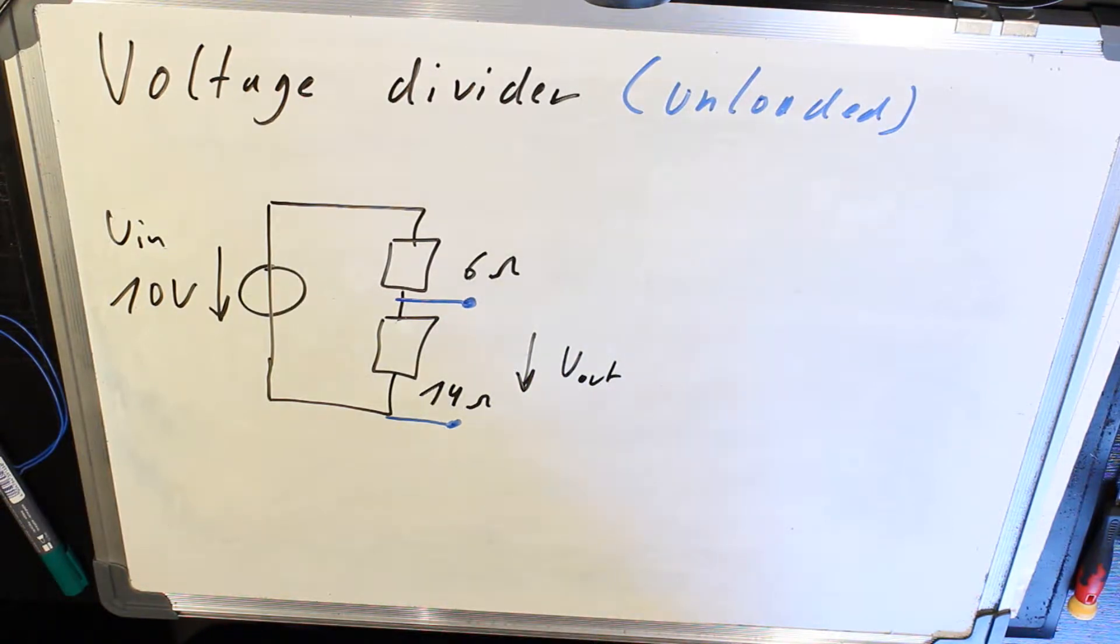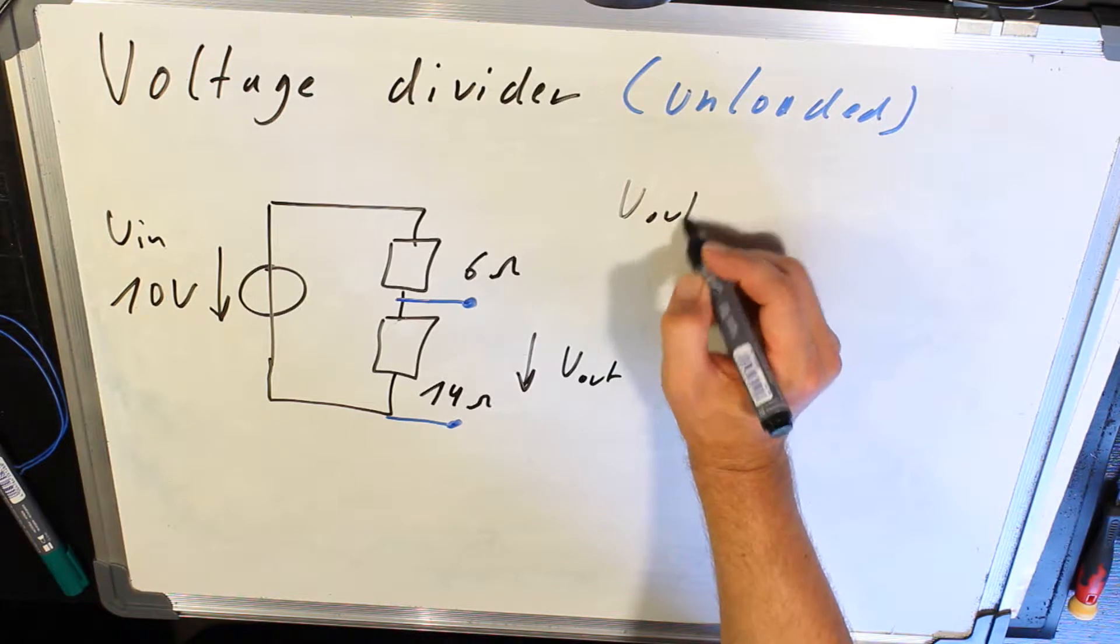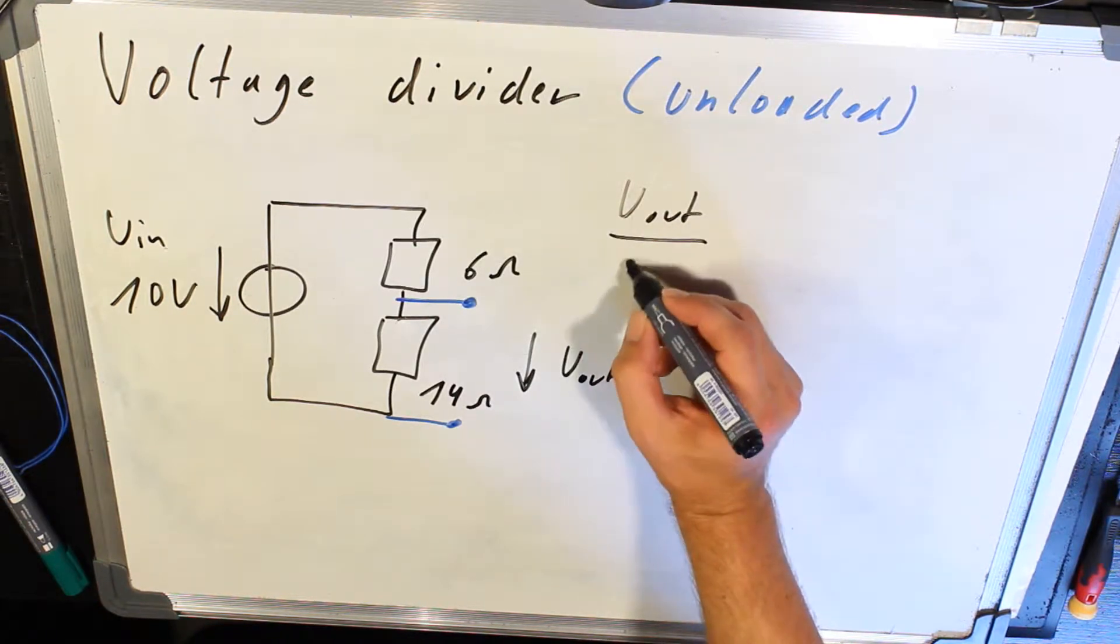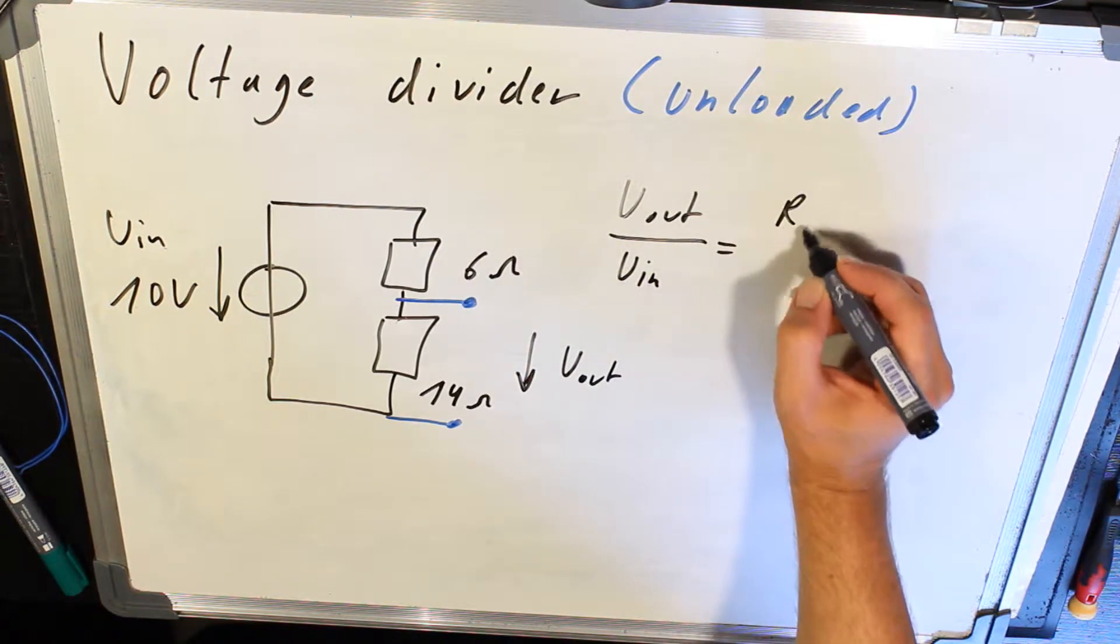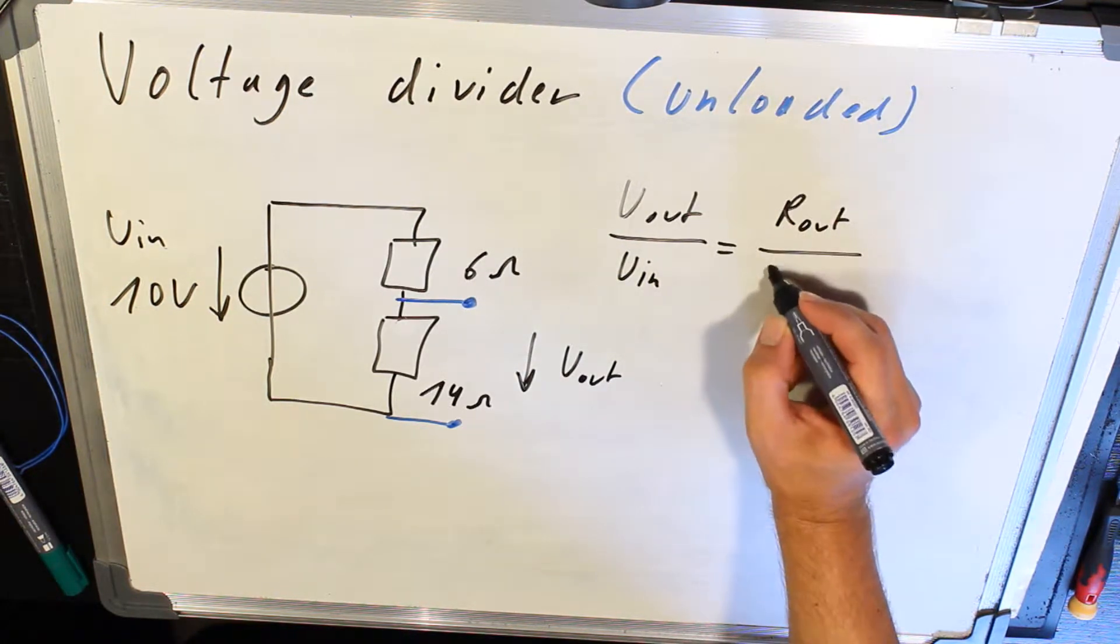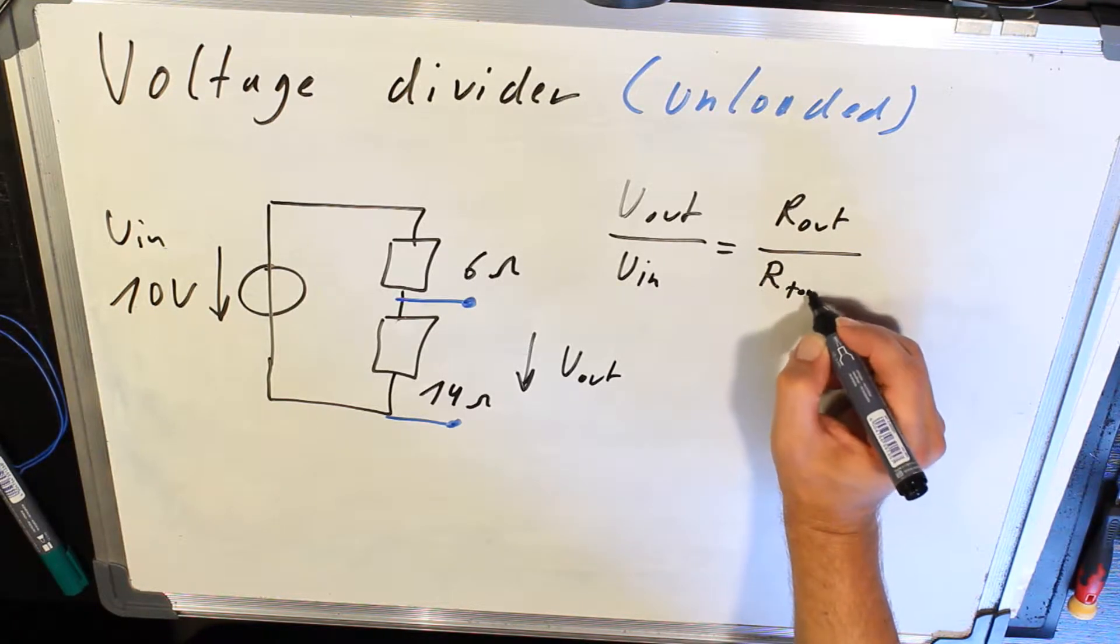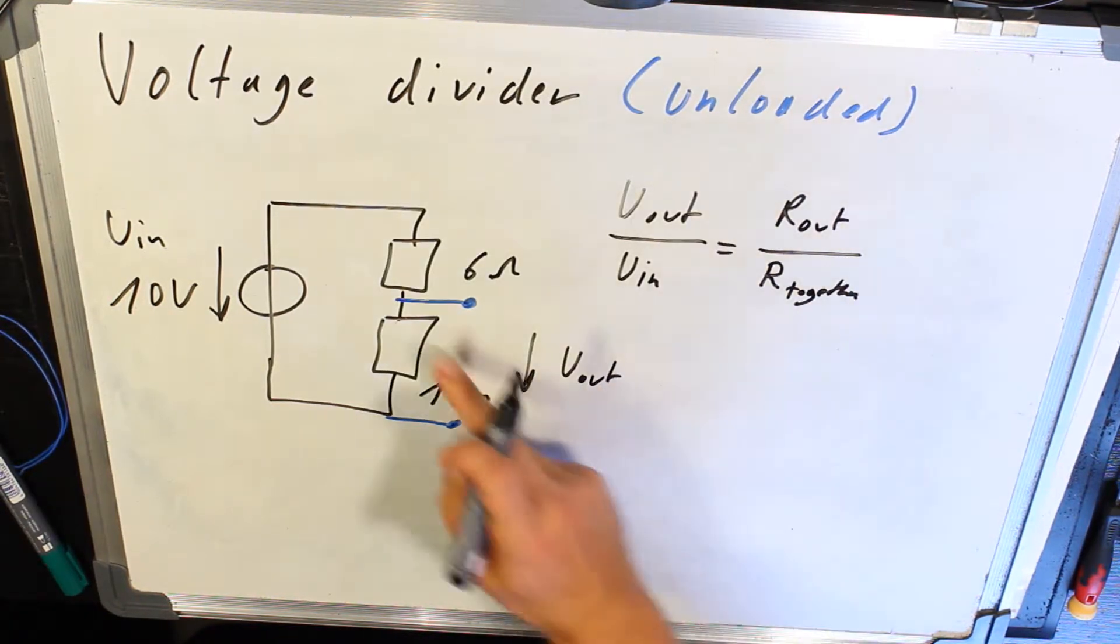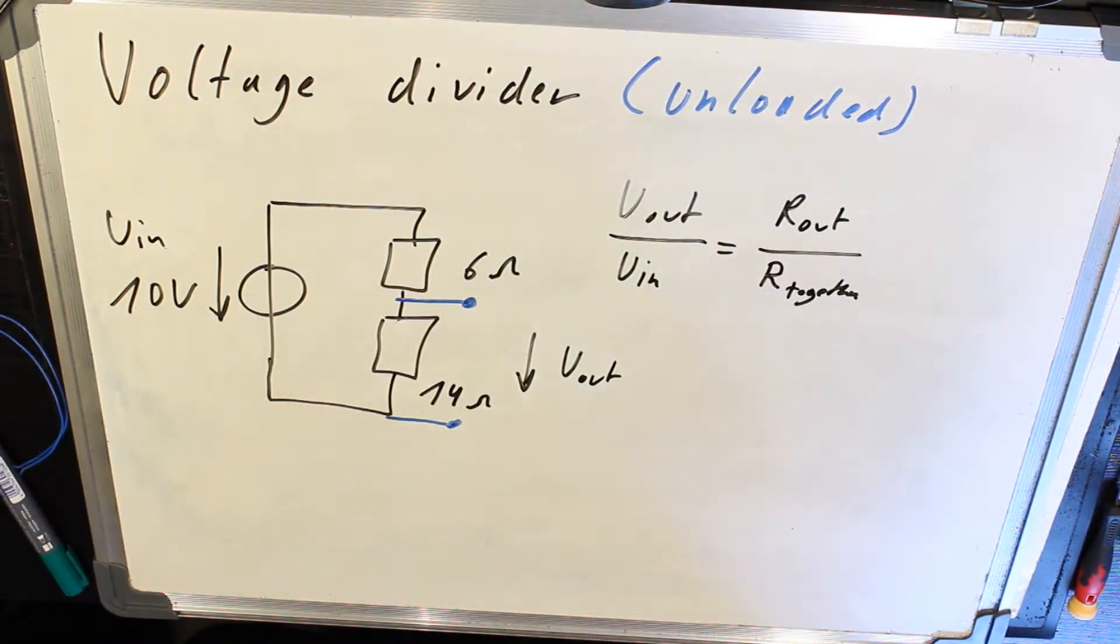Now how to calculate this output voltage? You need a formula. The formula is U_out divided by U_in equals R_out divided by R_together. Together, I call it together, means 6 ohm plus 14 ohm.